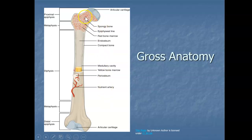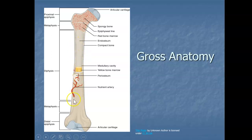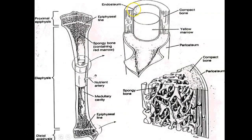To summarize: the epiphyses are the ends, the diaphysis is the shaft, and the transition between them is the metaphysis. The epiphyses are made of spongy bone; the diaphysis is made of compact bone. The endosteum lines the medullary cavity inside the long bone, and the periosteum covers the outer surface. This diagram shows the endosteum covering the inside versus the periosteum on the surface, along with the spongy and compact bone regions.